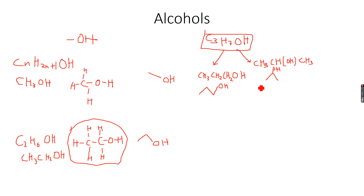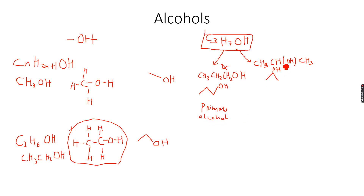These are structural isomers. This one is called a primary alcohol because the carbon to which the OH is attached — let's call it the alpha carbon — is in turn attached to only one other carbon atom. But for the second alcohol, the alpha carbon is attached to two carbon atoms, so this is called a secondary alcohol.